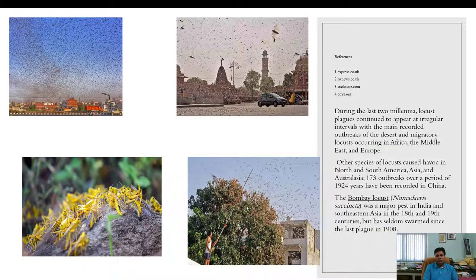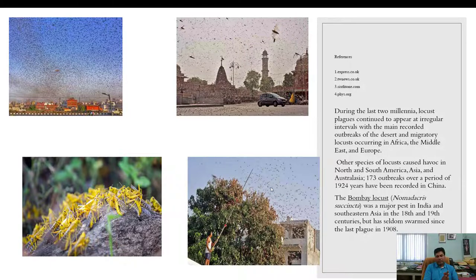During the last two millennia, locust plagues have appeared at irregular intervals, with major recorded outbreaks of the desert and migratory locust occurring in Africa, the Middle East, and Europe. Other species caused havoc in North and South Africa and Australia. A total of 173 outbreaks over a period of 1,924 years have been recorded. The major species in India and southwestern Asia was the Bombay locust, Nomadacris, with large outbreaks last observed in 1908.